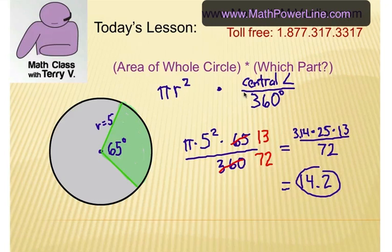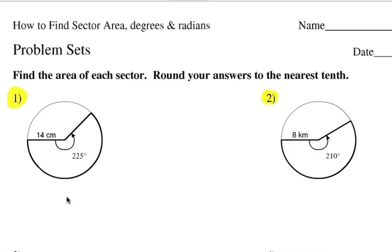So again, we're going to take the area of the entire circle, multiply by what part we're talking about. The central angle divided by 360 degrees. Alright, let's work a couple of these together. So grab a piece of paper and calculator and follow along with me. Here we go.